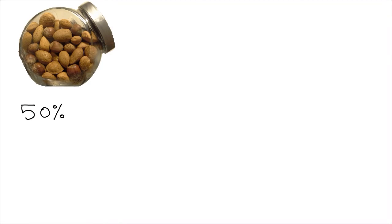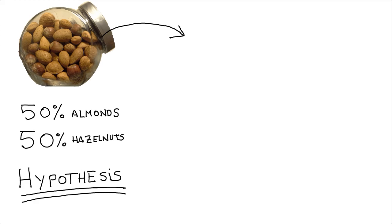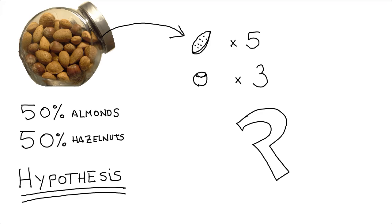Would I be able to infer from the number of almonds and hazelnuts that I have in my hand whether actually there are 50% almonds and 50% hazelnuts in the original bowl? This is a classic problem in statistics. Let's start with the assumption that we have half almonds and half hazelnuts — this is our hypothesis. In statistics, as in science, we work with hypotheses. We get a fistful of nuts and we count them. We observed that there are 5 almonds and 3 hazelnuts. The question is, can we infer from our small sample that in the bowl there are half almonds and half hazelnuts?